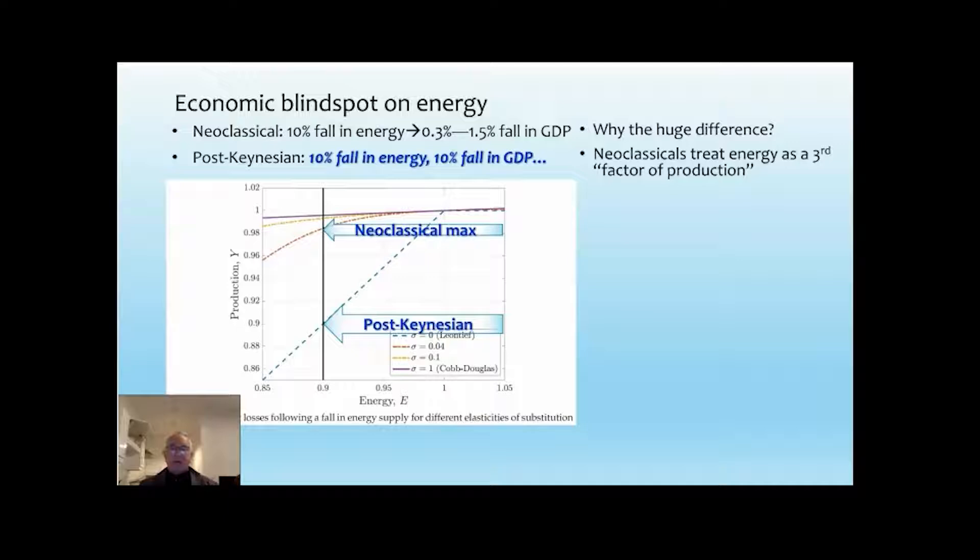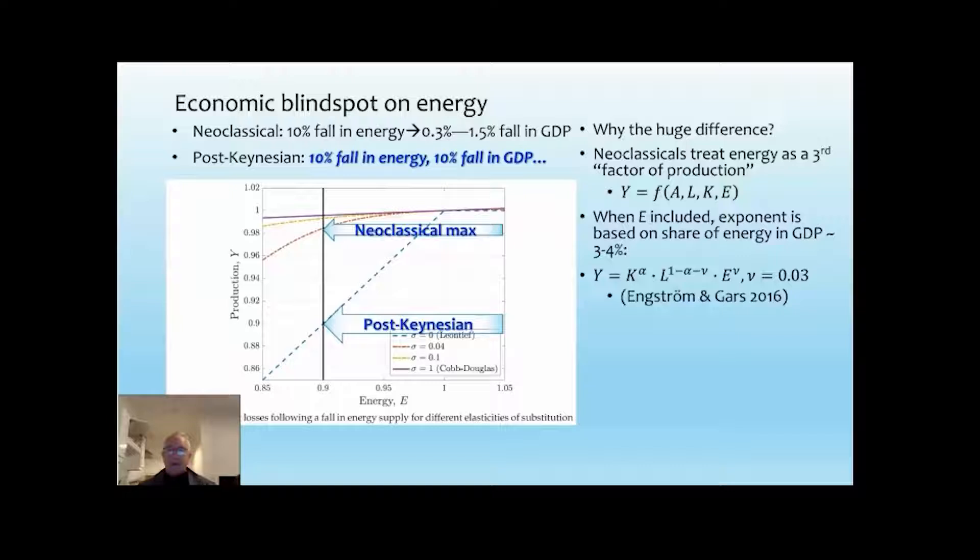And why the huge difference? Well, it's because the neoclassicals treat energy as the third factor of production. So they start from seeing output as a function of technology, A, labour, L, capital K. And then when they consider energy, they just tack it on as another factor of production. Now when you do that, of course it has to have its own exponent, as the other functions do, and the exponents will have to sum to one. So they use a value for the exponent for energy, which is based on its share of GDP, which is about 3% or 4%. So this is from a paper from Engstrom and Garst in 2016. That's their production function. And they gave the exponent of energy a value of 0.03. Bachmann and Co. took energy as E and then everything else as X, and gave the alpha of the value of 0.04.